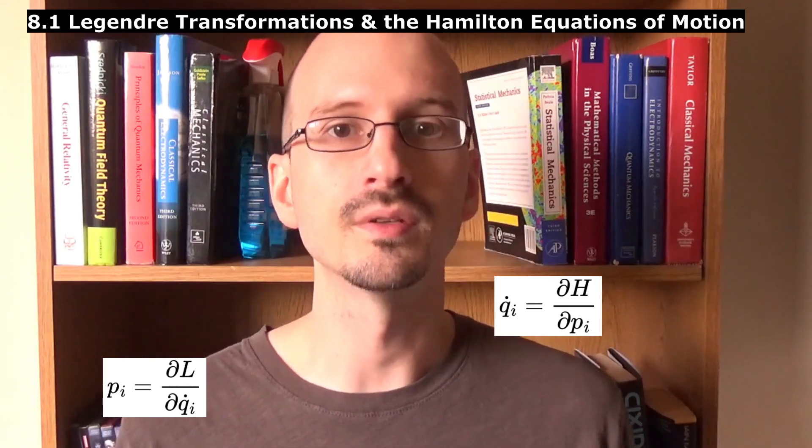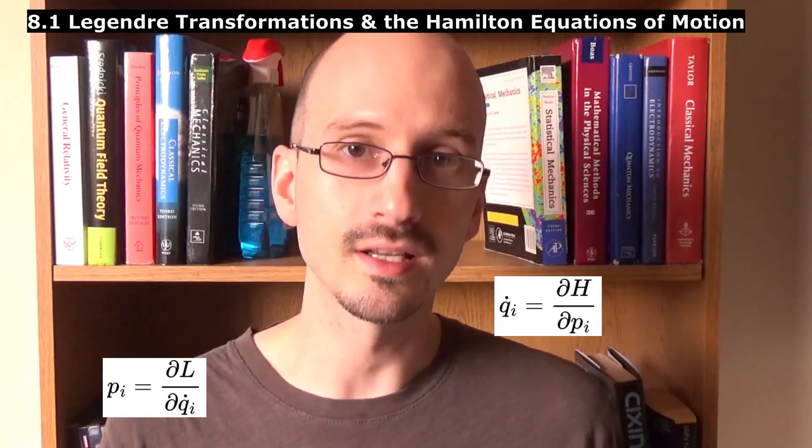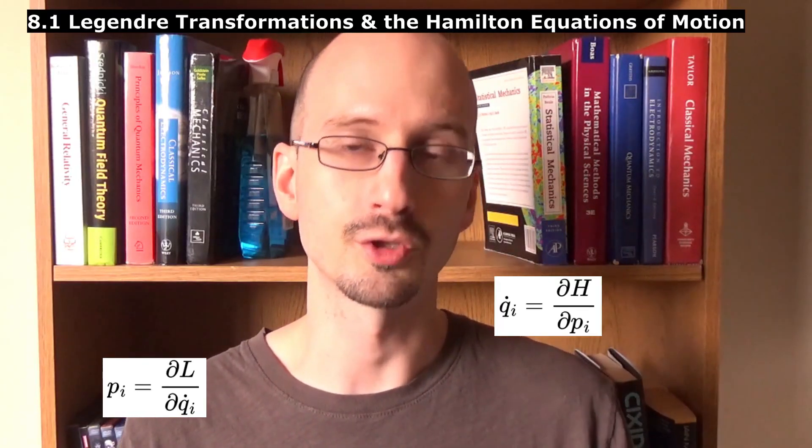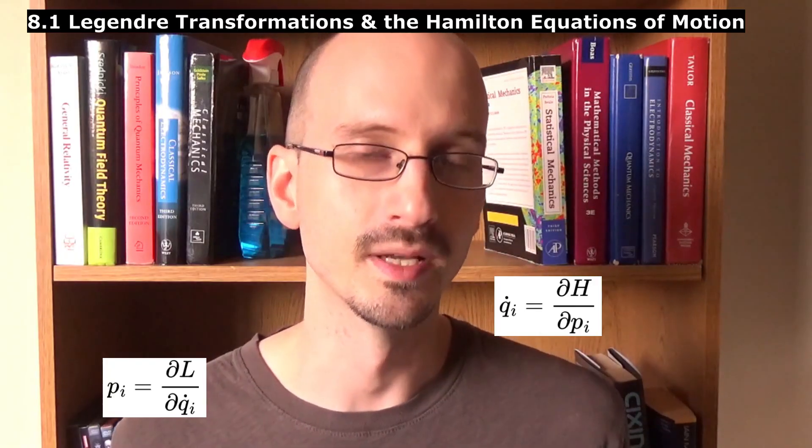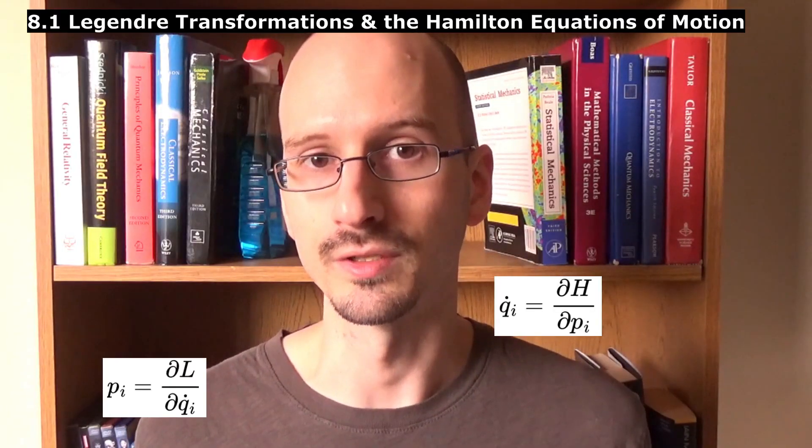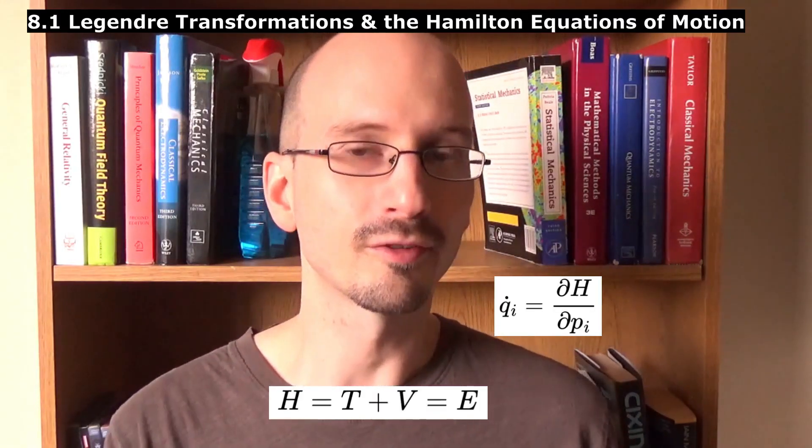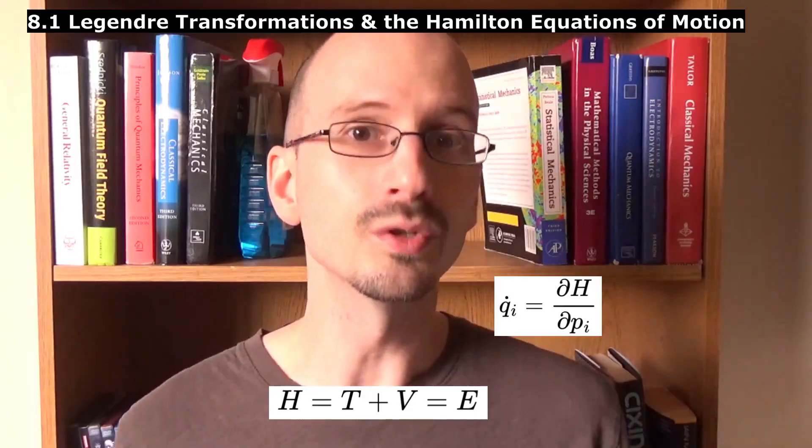If we started from the Lagrangian, the velocity equations are just the transformation equations of momentum. They don't give us any new information. But if we start purely from the Hamiltonian, they do give us information.